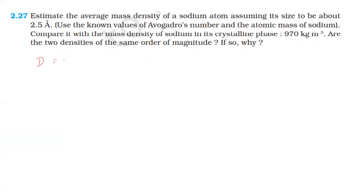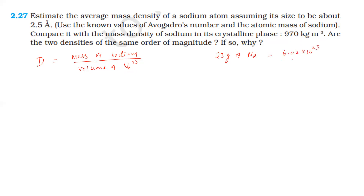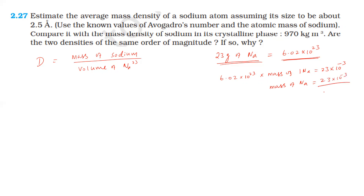The density of a sodium atom equals mass of sodium atom divided by volume of sodium atom. The atomic mass of sodium is 23 grams per mole, which equals 23 into 10 power minus 3 kg per mole. One mole contains 6.02 into 10 power 23 particles. So the mass of one sodium atom equals 23 into 10 power minus 3 divided by 6.02 into 10 power 23 kg.